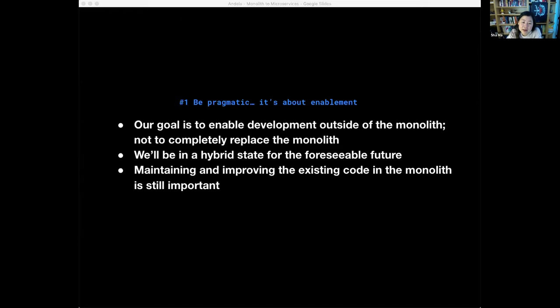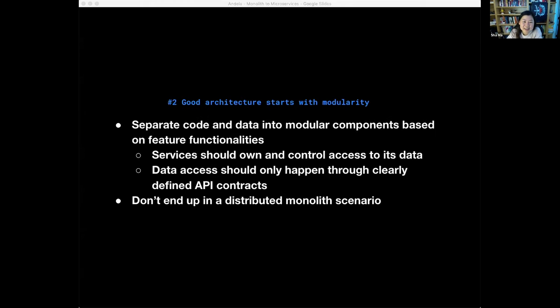And because of that, we need to accept the fact that GitHub, for the foreseeable future will be a hybrid monolith microservices environment, which means it's still very important for us to maintain and improve our existing code base inside of the monolith. A good example of this is our recent upgrade to Ruby 2.7. You can read more about what we did and how we made our overall systems faster and better on the GitHub blog. I'll have a reference link to that at the end of the talk. Good architecture starts with modularity. The first step towards breaking up a monolith is to think about the separation of code and data based on features and functionalities. This can be done within the monolith before physically actually separating them in a microservices environment. And it's generally a good architecture practice to make the code base more manageable.